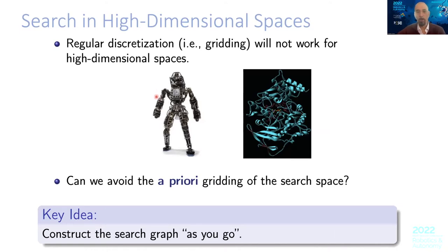So how can you deal with these types of problems? One idea that has been around for several years is to avoid gridding — meaning avoiding building the graph a priori — but instead build the graph as you go, typically by sampling. This gives rise to a class of algorithms called sampling-based algorithms.